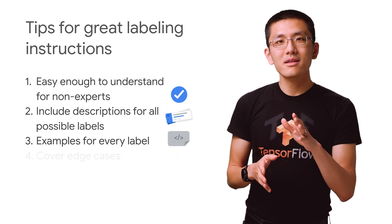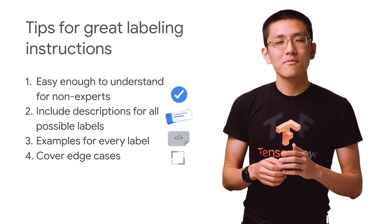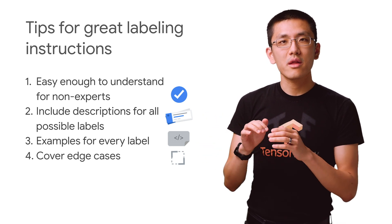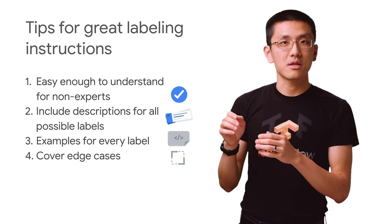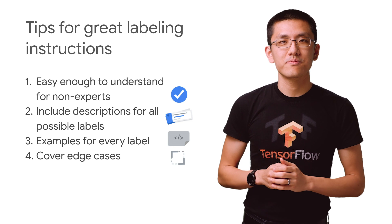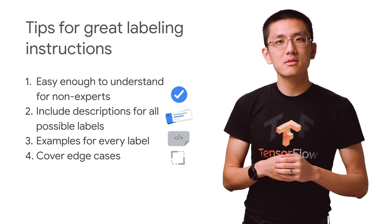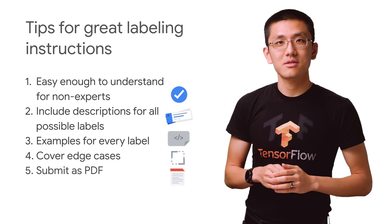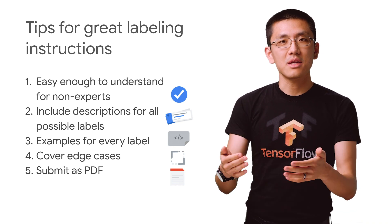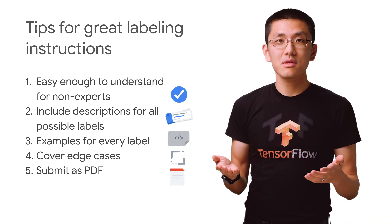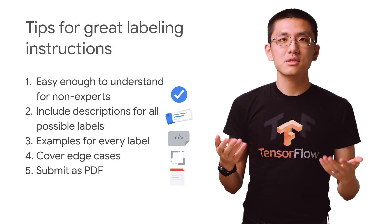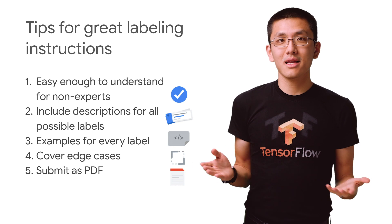Fourth, clarify as many edge cases as you can. For example, with bounding boxes and images, be sure to state whether a partially covered item should be included and how tightly that bounding box needs to be drawn. The system requires that you submit PDF instructions, so be sure to have some way to output to PDF. One option I would recommend is to just write it up in Google Slides or Google Docs and save as PDF.